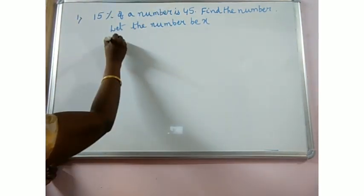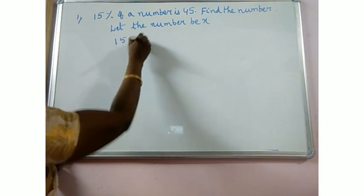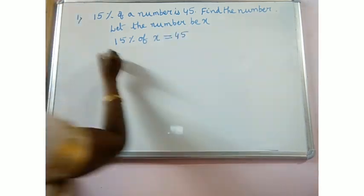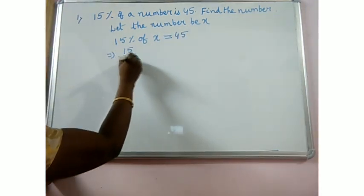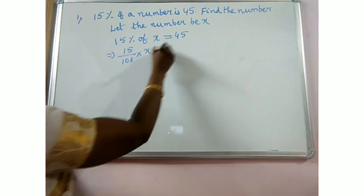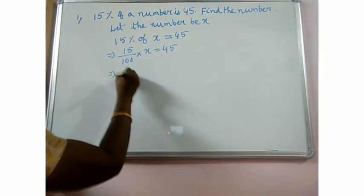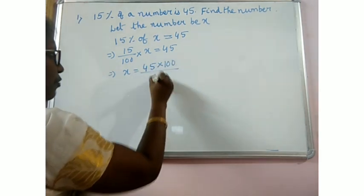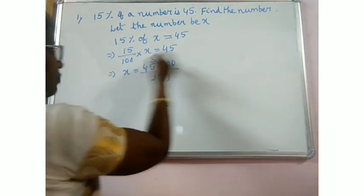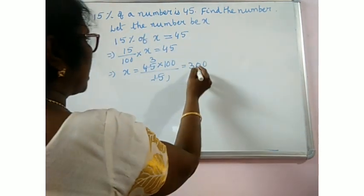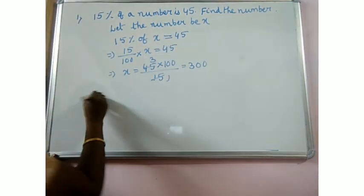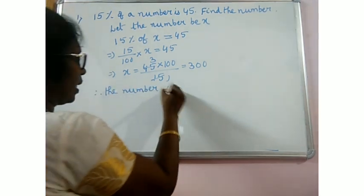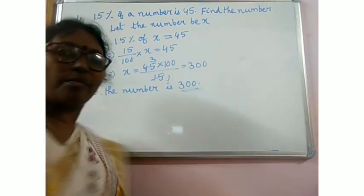15% of a number, that means 15% of x. x means equal to 45. That implies 15 by 100 into x is equal to 45. That implies x is equal to 45 into 100 by 15, which is 300. Therefore, the number is 300.